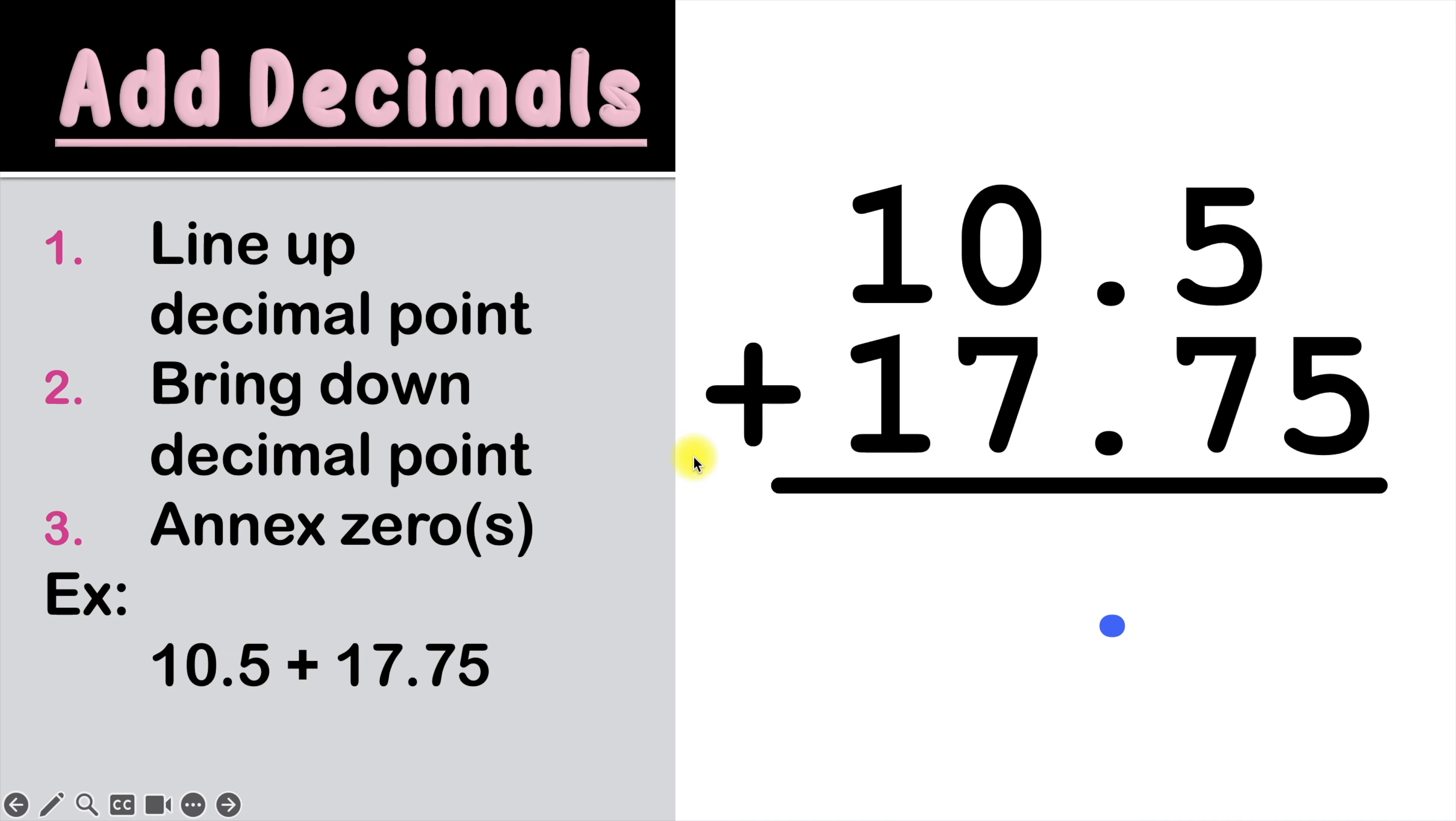And finally, we can go to step three, which is to annex zero or zeros if needed. And to do that, you just have to look for any blank spaces you have after the decimal point. And wherever you see a blank space, you put a zero there. Since there's a blank space here on top of this five, we'll place a zero right on top of it.